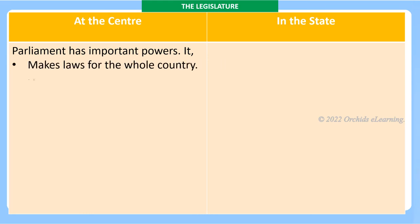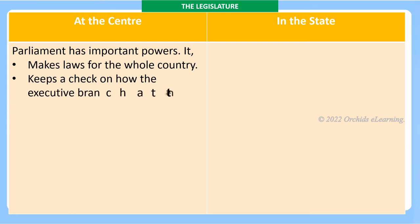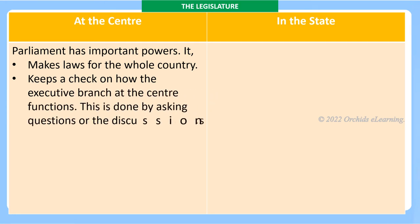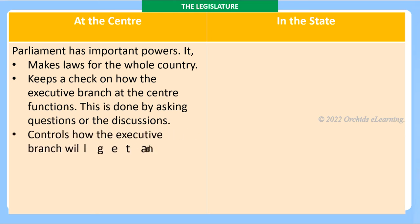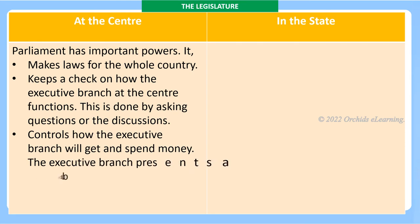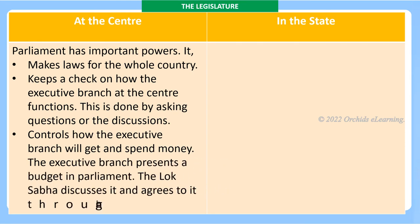Parliament keeps a check on how the executive branch at the center functions — this is done by asking questions and through discussions. It also controls how the executive branch will get and spend money. The executive branch presents a budget in Parliament; the Lok Sabha discusses it and agrees to it through a vote.